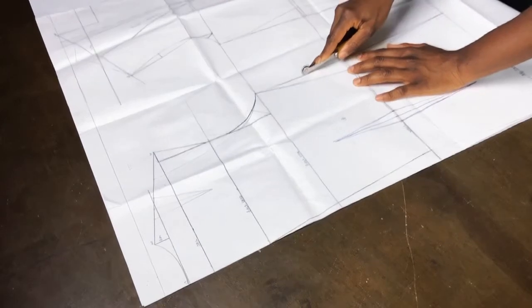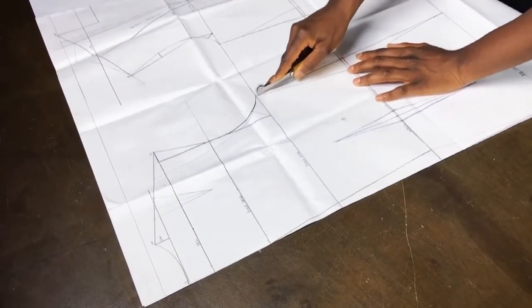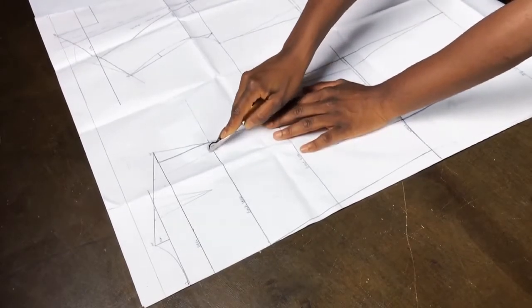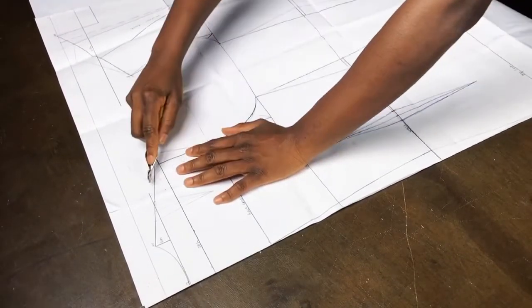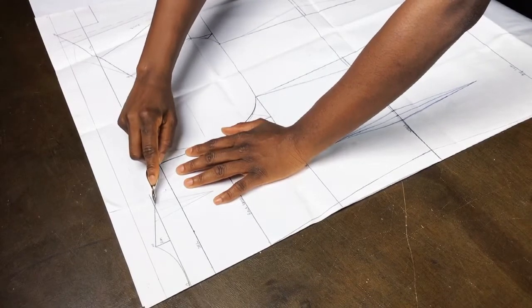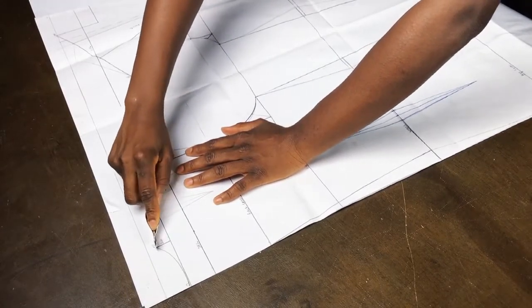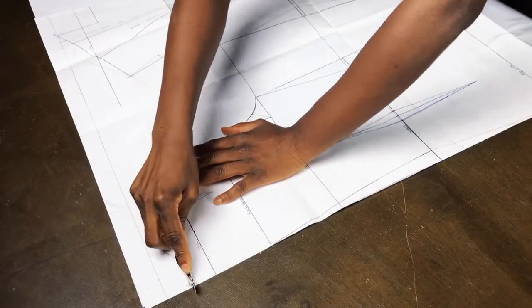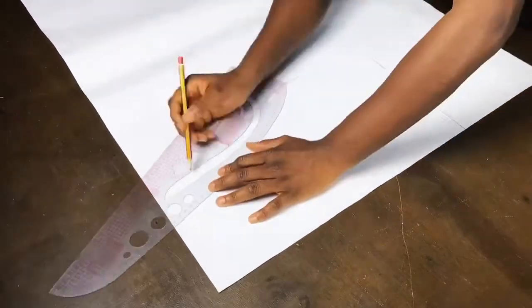Start off by tracing your back bodice on fresh paper. Make sure you have enough room for the arm extension. Ensure that the shoulder that has been cut out and the shoulder slant is the width that you want. So I have reduced the width of this pattern to about 4 inches.